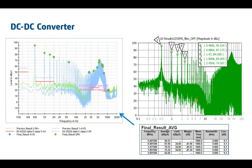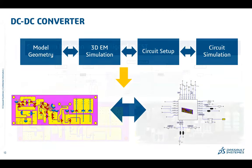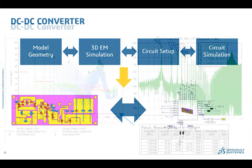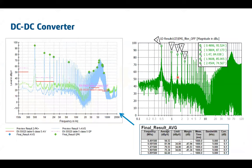Here is an illustration of the simulated results on the right-hand side versus the measured results on the left-hand side. Looking at the CE result — this is what you get from the LISN probe, which is looking for noise coming into the power supply lines — you can see that the results from simulation are very close to the actual results from the fabricated and tested prototype.